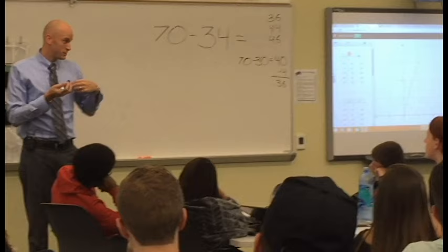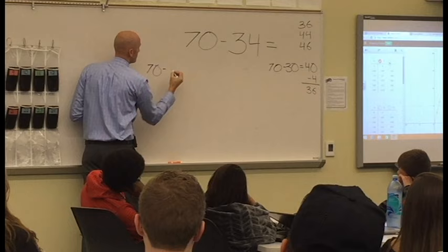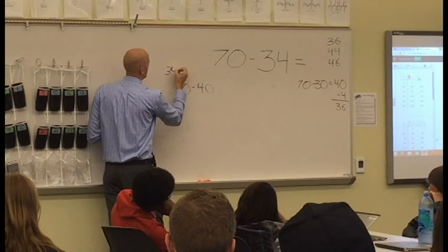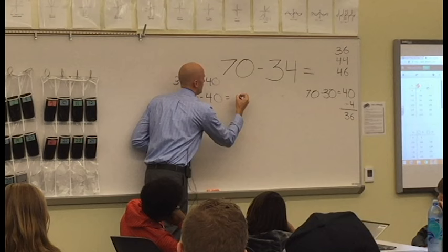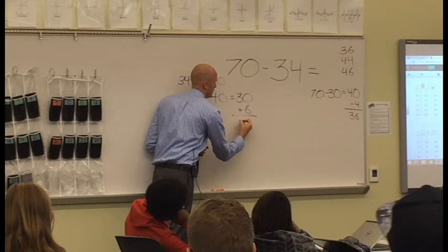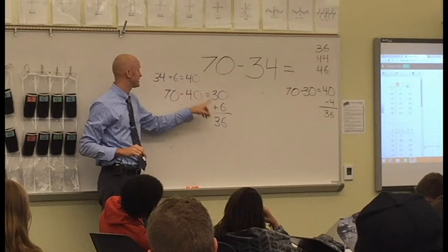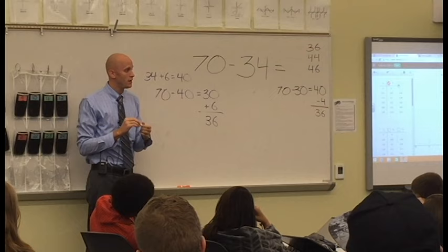Anybody have another answer they would like to defend or even another solution for 36? So I made 34 into 40, so I subtracted 40 from 70. So you added 6 to 34 and did 70 minus 40, and that equals 30, and I added 6 and this equals 36. So you made a similar problem here by adding 6 to get to a friendly number of 40, and then since you added 6 there, you realized that you had to do the same here.